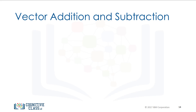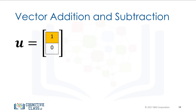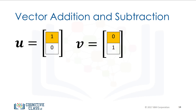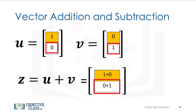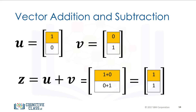Vector addition is a widely used operation in data science. Consider the vector u with two elements. Similarly, consider the vector v with two components. In vector addition, we create a new vector z. The first component of z is the addition of the first component of vectors u and v. Similarly, the second component is the sum of the second components of u and v. This new vector z is a linear combination of vectors u and v.